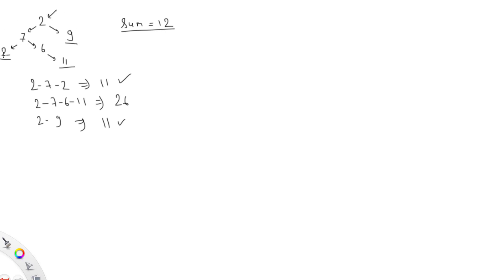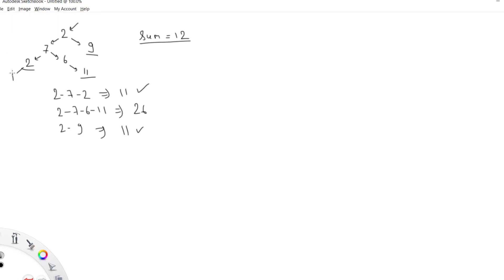Let's say we have one more element here as 1, and my sum is 13. In this path my sum is 12, this path is 26, this path is 11. It means these branches have less sum than the given value, so I need to remove these branches completely — I need to remove this 2 and 1, and I need to remove this 9.